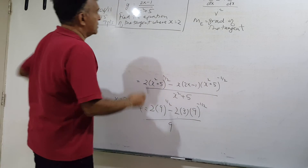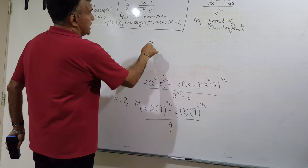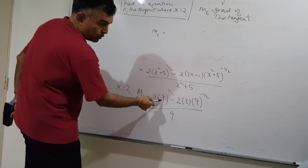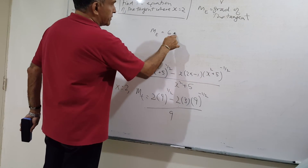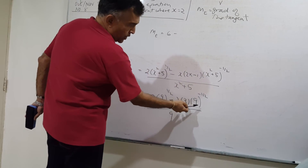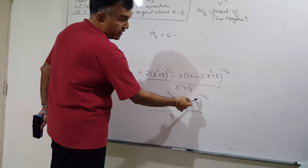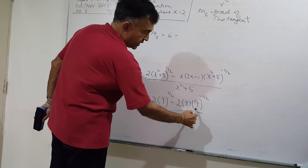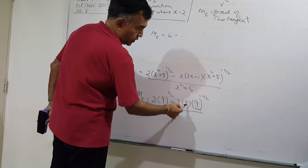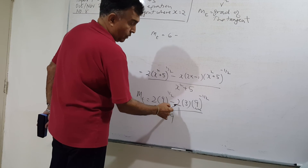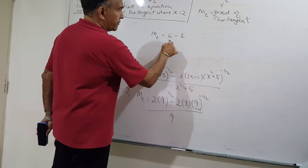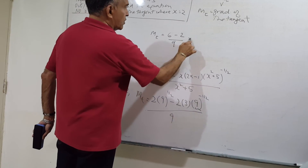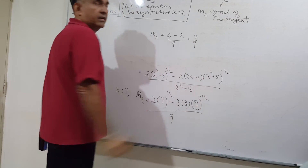Let's work out mt. The square root of 9 is 3, so 2 times 3 is 6. Then 9 to the power of negative 1/2 is 1/3. So we have 1/3 times 3 equals 1, times 2 equals 2. Over 9. So mt equals 4 over 9.